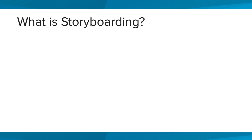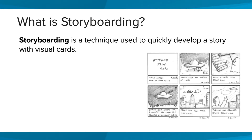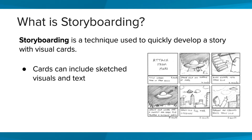What is storyboarding? Storyboarding is a technique used to quickly develop a story with visual cards. Here's an example of a storyboard for a simple scene. The storyboard cards often include sketched visuals and text. The cards are done quickly to capture the essence of the scene, so they're drafts and not final versions.